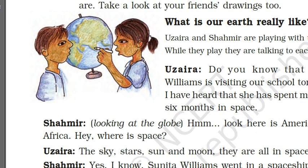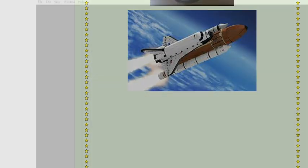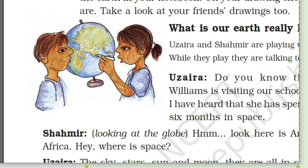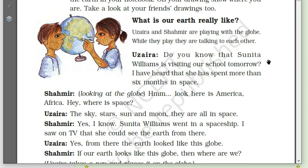Two children, Uzaira and Shahamir, are playing with the globe and having a conversation. Uzaira says: 'Do you know that Sunita Williams is visiting our school tomorrow? I have heard that she has spent more than six months in space.' Shahamir, looking at the globe, says: 'Look, here is America, Africa. Hey, where is space?' Uzaira replies: 'The sky, the stars, the moon and the sun —'